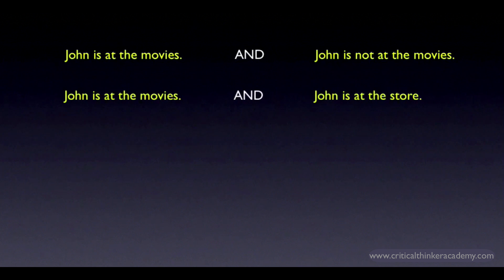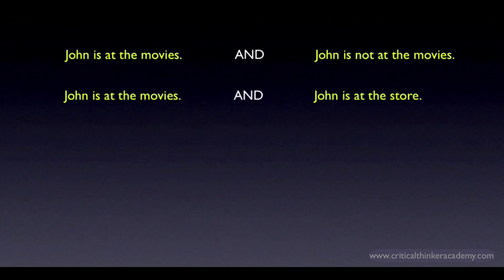This is actually an interesting case from a formal point of view. Let's assume that being at the store implies that you're not at the movies — excluding the odd possibility where a movie theater might actually be inside a store. Then it seems appropriate to say that since they both can't be true at the same time, it would be contradictory to assert that John is both at the movies and at the store. That's the way most logicians would interpret this — that the law of non-contradiction applies to this conjunction, even though strictly speaking these aren't logical contradictories of one another.